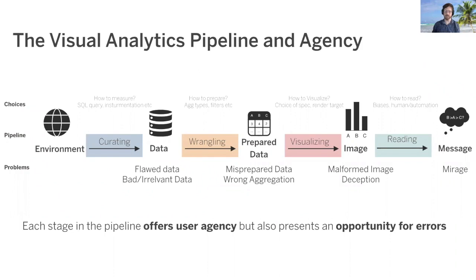On the road to making a chart or visualization, there are many steps and stages, each of which are liable to let error in. Consider a simplified pipeline model. An analyst decides how to curate data, how to wrangle it into a usable form, how to visually encode that data, and then finally how to actually read it. At each moment when the analyst exercises agency, they create an opportunity for error, and thereby a mirage, which can cascade along this pipeline, creating further illusory insights.